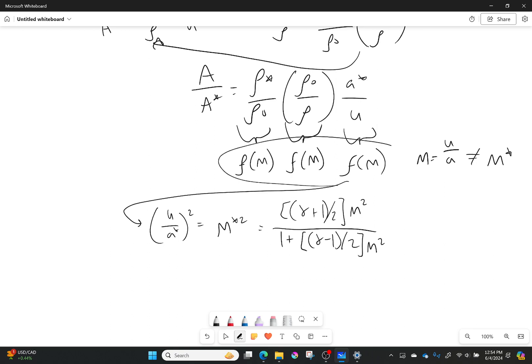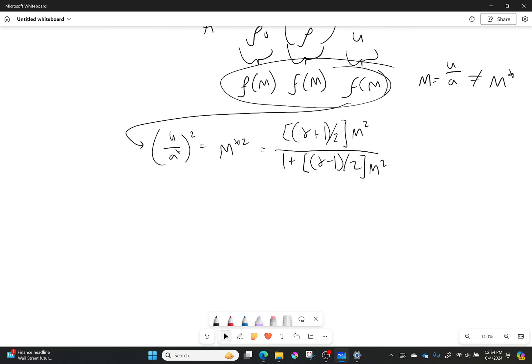Okay so all three of these are functions of Mach number which means that my area over a star must be a function of Mach number. So A over A star is also equal to a function of Mach number and I'm going to go ahead and give you the equation now.